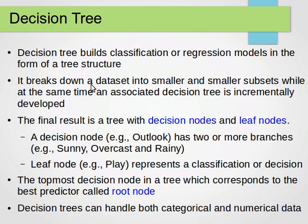What it does is it breaks down a dataset into smaller and smaller subsets, while at the same time an associated decision tree is incrementally developed. So we break down the dataset into smaller sets while building or increasing a decision tree. The final result is a tree with decision nodes and leaf nodes.